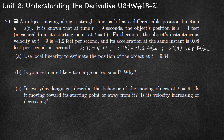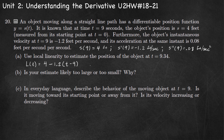Part A: use local linearity to estimate the position at t equals 9.34. To write the local linearization we need s of 9 and s prime of 9. L of t equals s of 9 plus s prime of 9 times (t minus 9), which is 4 minus 1.2 times (t minus 9). Substituting t equals 9.34 gives L of 9.34 equals 4 minus 1.2 times 0.34, which simplifies to 3.592 feet.